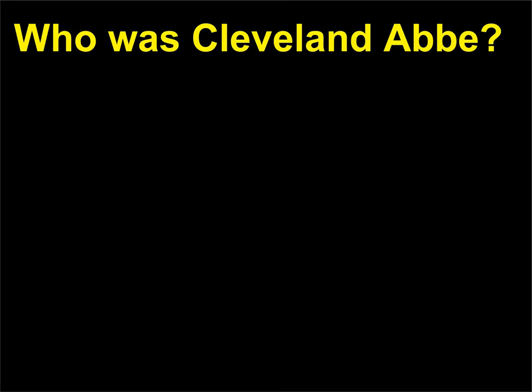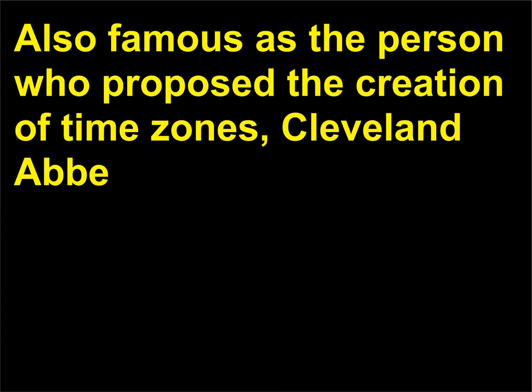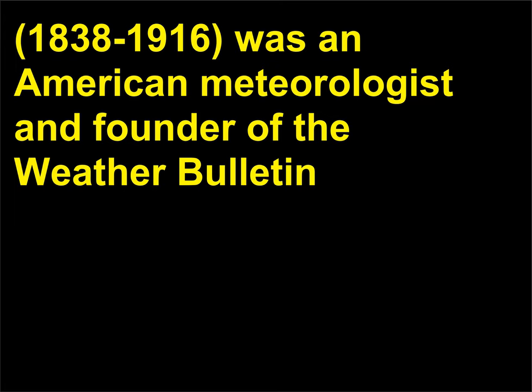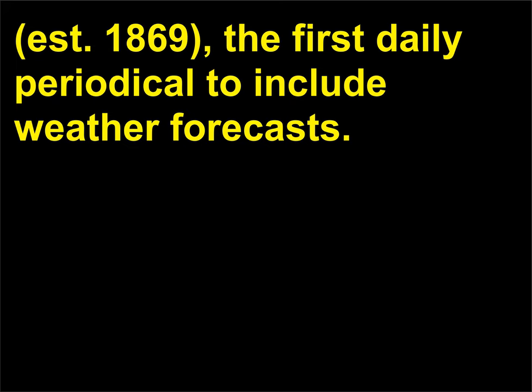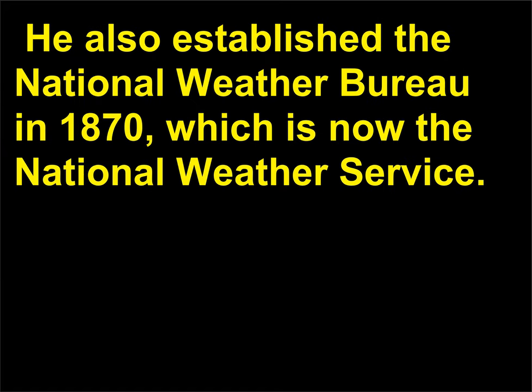Who was Cleveland Abbe? Also famous as the person who proposed the creation of time zones, Cleveland Abbe (1838–1916) was an American meteorologist and founder of the Weather Bulletin (1869), the first daily periodical to include weather forecasts. He also established the National Weather Bureau in 1870, which is now the National Weather Service.